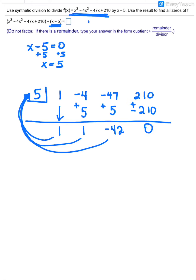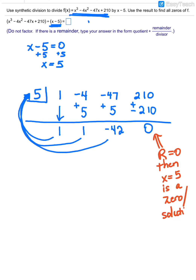When we add, we get 0. Any time you have a 0 in this final column — remember, that's your remainder — if the remainder is equal to 0, then what that tells you is whatever was in the box — in this case, x equals 5 — that is a zero of your polynomial. You can also call it a solution; zeros are just another name for a solution. So we have found one of our zeros: x equals 5.